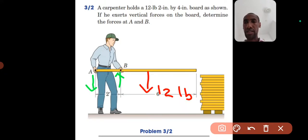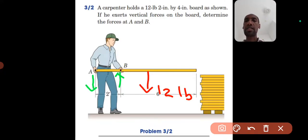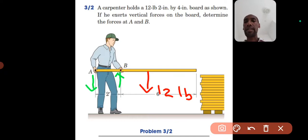This is the appropriate direction of the forces exerted by the carpenter on the board. The next step is the analysis. This is a 2D equilibrium problem, so we have three equilibrium equations: summation of forces in X equals zero, summation of forces in Y equals zero, and summation of moments at any point equals zero.